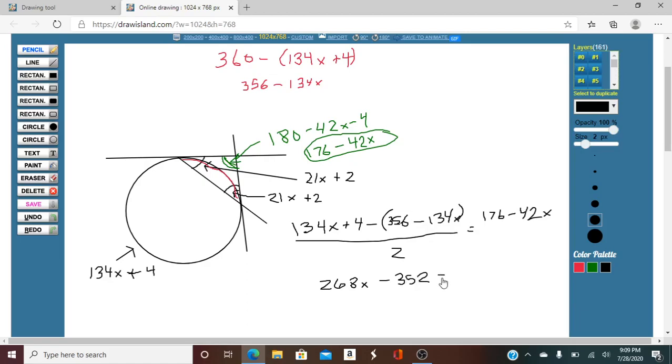We're going to multiply both sides by 2, so we get 268X minus 352 equals 352 minus 84X.